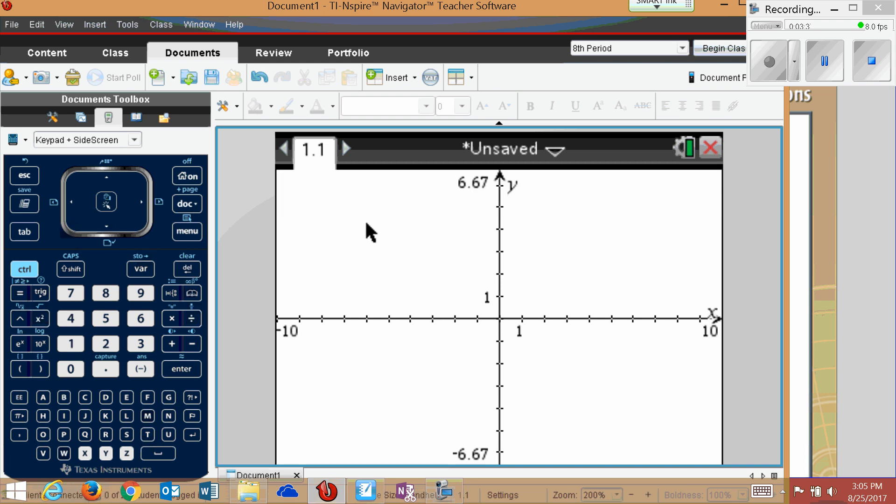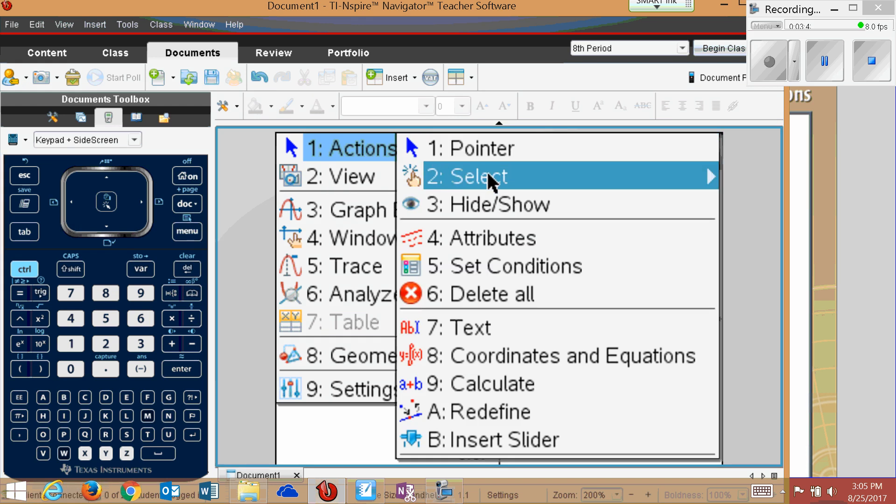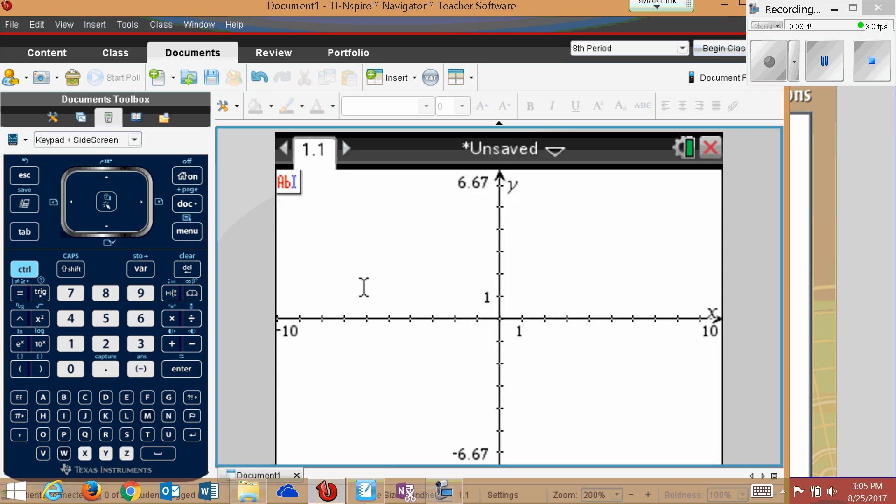So instead of typing it in there, I'm just going to hit the screen, hit menu, actions, and I'm going to just add text. And I'm going to type it in exactly how it looks. The equation they gave us was x equals 3y squared. Hit enter.